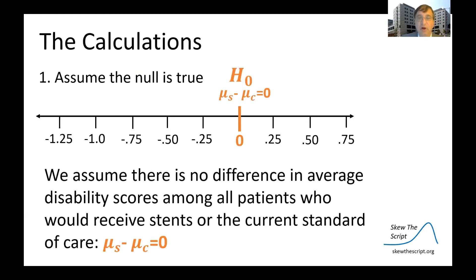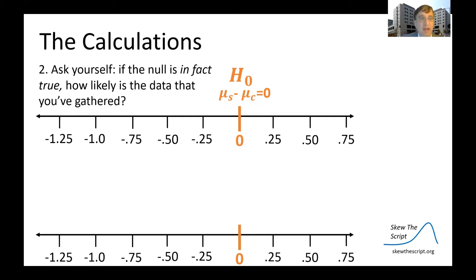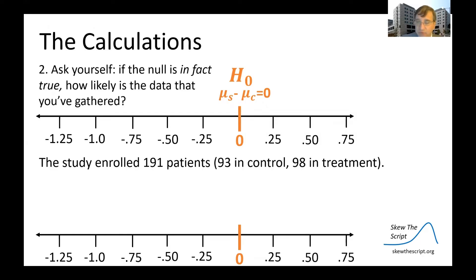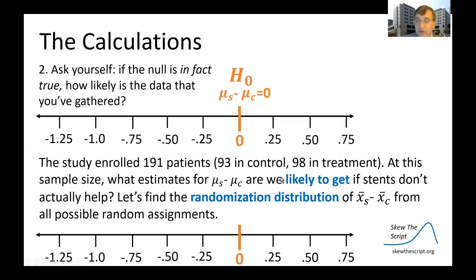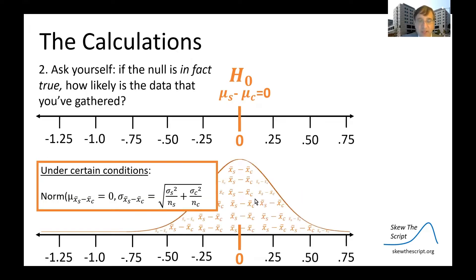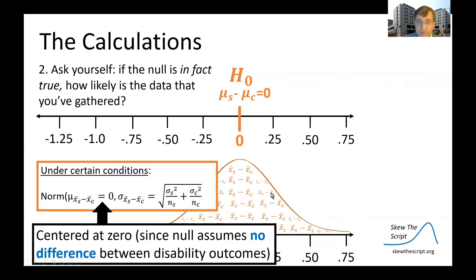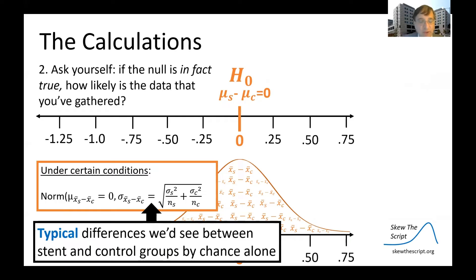We assume the null is true — no difference — and ask how likely is the data we gathered to occur. We enrolled 191 patients. We need to find the randomization distribution of the sample means from all possible random assignments. It is a bell curve centered on the null hypothesis value of zero. Typical differences between stent and control groups that occur by chance will tend to cluster near the null, whereas more extreme differences indicate a very unlikely result and a likely genuine treatment effect.